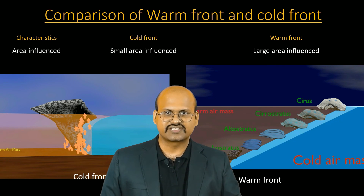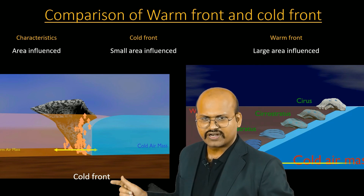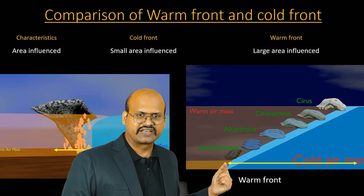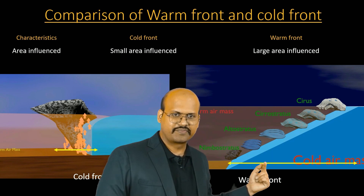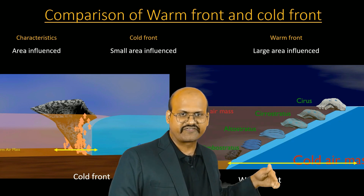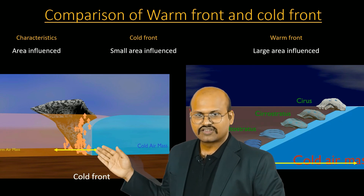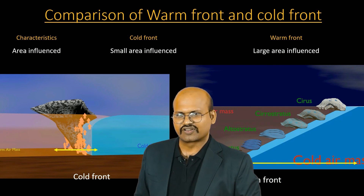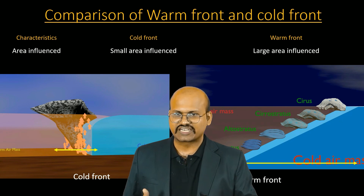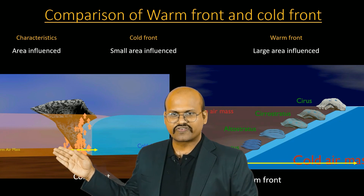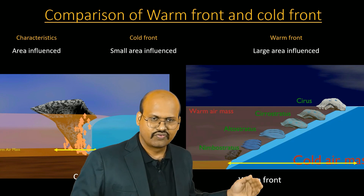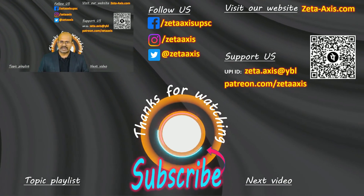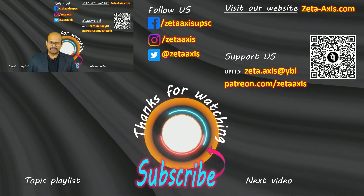The next characteristic is area influenced. Cold fronts are spread over a very smaller area compared to warm fronts. The warm front can spread several hundreds of kilometers because of its very gentle slope, therefore affecting a very large area. Cold fronts are spread across a very small region — around 50 to 100 kilometers — but not like warm fronts which influence hundreds of kilometers. Therefore cold fronts affect a smaller region compared to warm fronts. If you like this video please like, subscribe, and share. Thank you.